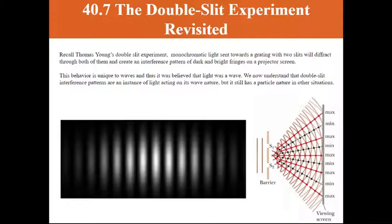Keep in mind that Section 40.7, which we'll talk about first, is supplemental. We've seen in the optics chapters a discussion on the Double Slit Experiment, first done by Thomas Young.